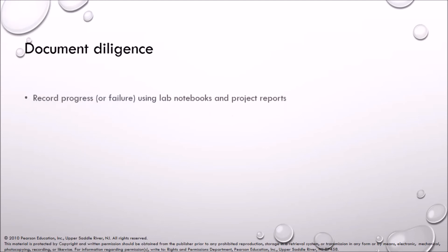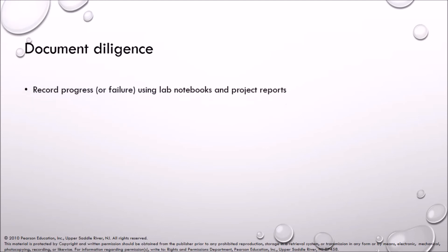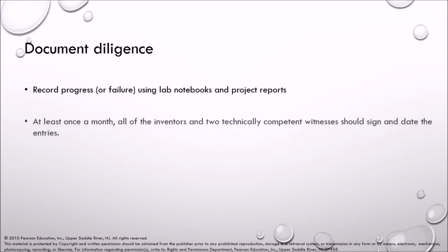Document diligence: record progress or failure using lab notebooks and project reports. At least once a month, all of the inventors and two technically competent witnesses should sign and date the entries. Always use actual dates — never backdate or predate.